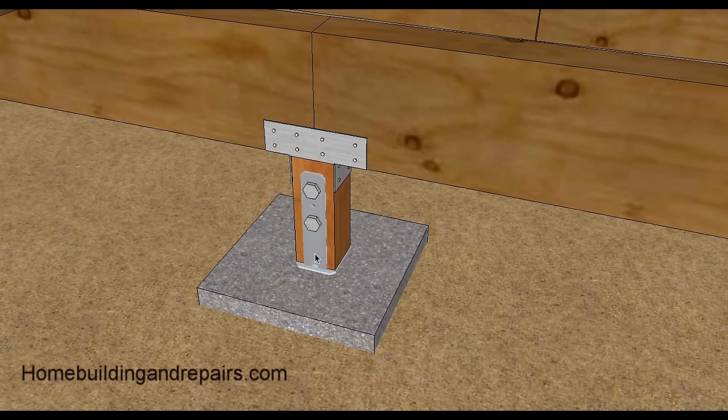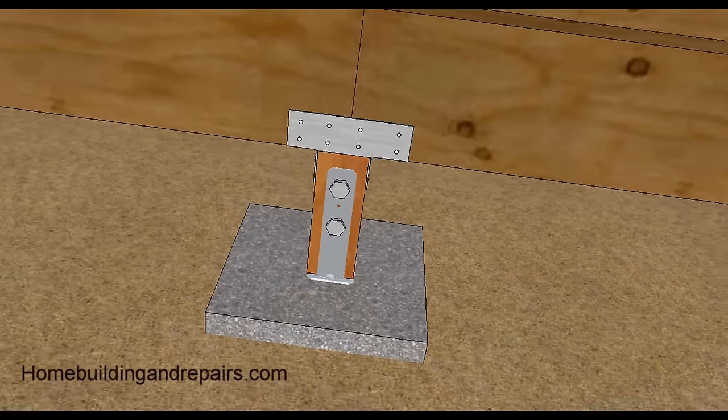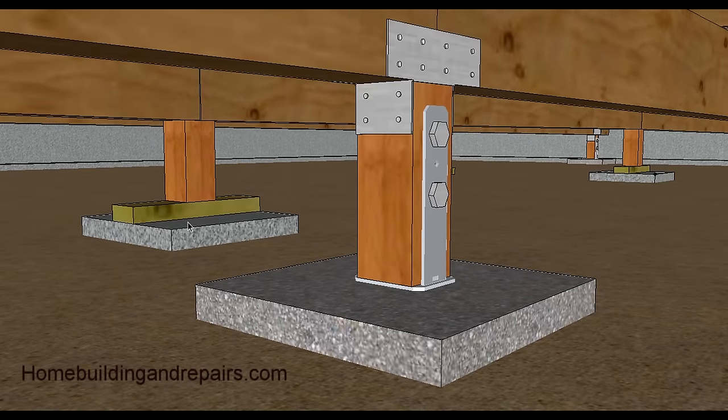So this here actually has a post base connector and a post to beam connector but these come in a variety of different shapes and sizes. I'm not going to go into a lot of detail on that. But they used to actually just pour concrete and then have a piece of wood on top and then the post sat on top of that.